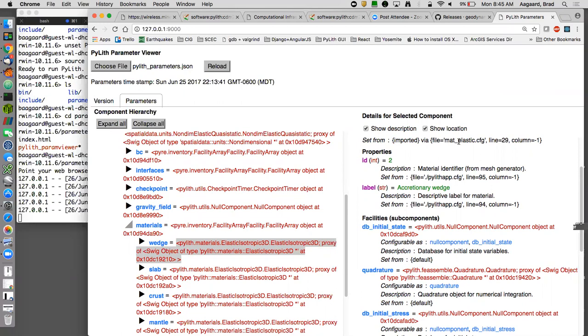It says where it was set from. In this case, it was set from a file, mat_elastic.cfg, and it tells you the line number of that file. So if you run a simulation and you can't figure out where it got that parameter, open up the parameters file, and you can actually find that component and see where it says it's getting its value. You may have accidentally overwritten that value later in one of your .cfg files.